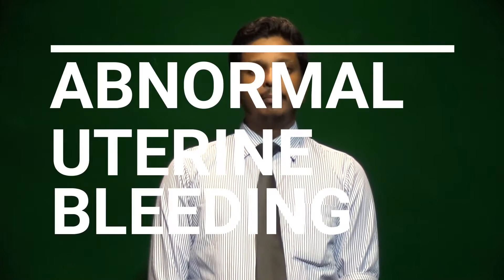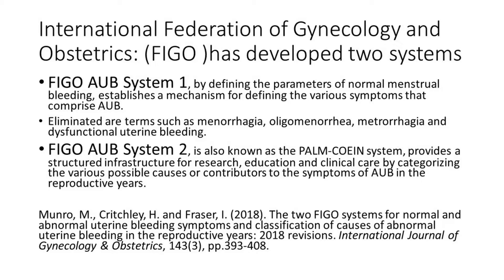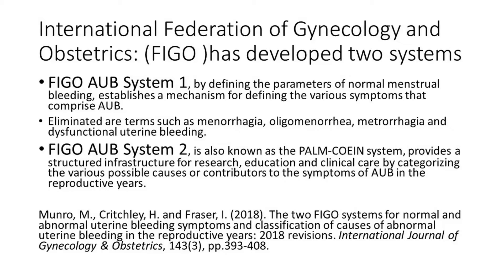Today's topic will be abnormal uterine bleeding. The International Federation of Gynecology and Obstetrics has developed two systems to define abnormal uterine bleeding. System one defines the normal parameters of the menstrual cycle, and system two is known as the PALM-COEIN system. Heavy menstrual bleeding is the most common clinical presentation of abnormal uterine bleeding.